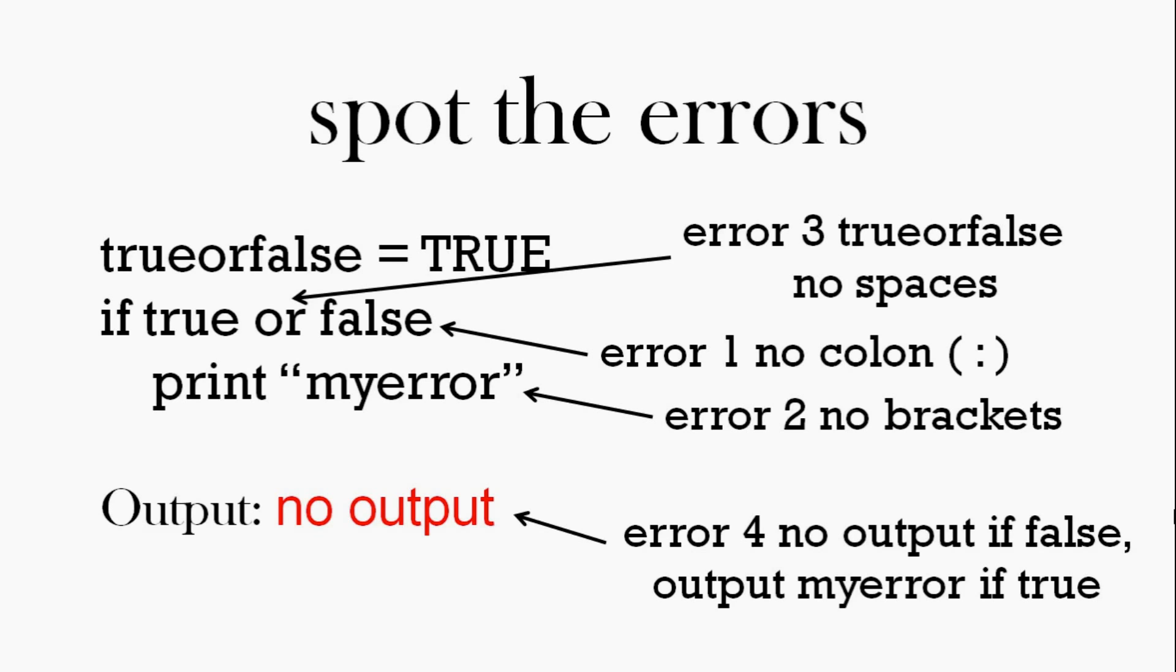Well, it says it's true, but the output says there's no output. So either the true or false is false, so there's no output, or if it's true as it says, then the output should have printed my error, the print statement. So that's the final error.